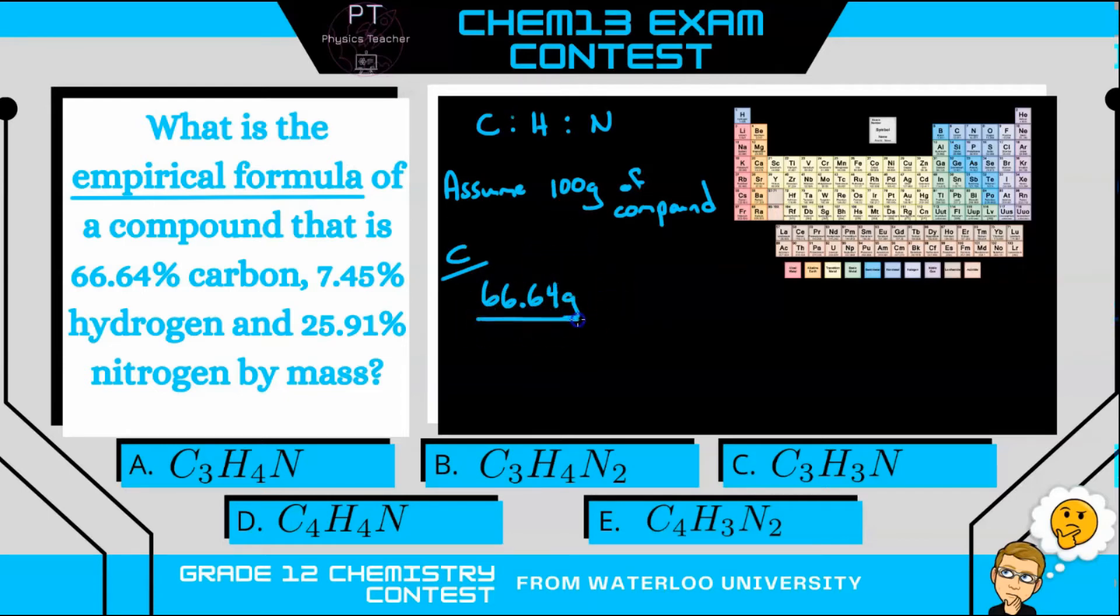See, that's why 100 grams is a lot easier to work with. And then we're going to divide that by its molar mass to figure out how many moles of carbon we have. Now the molar mass you get from your periodic table, and in this case for carbon it is 12.01 grams per mole. So when we do that, we calculate that there is 5.5 moles of carbon.